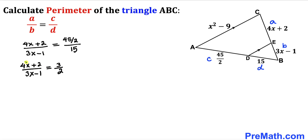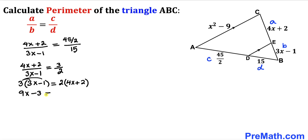Now let's cross multiply. So we get 3 times (3x minus 1) equals 2 times (4x plus 2). Distributing gives us 9x minus 3 equals 8x plus 4. Subtracting 8x from both sides gives us x minus 3 equals 4.